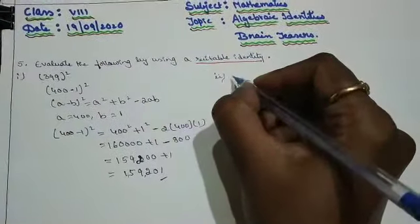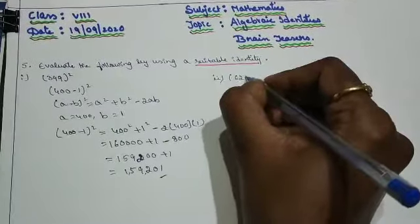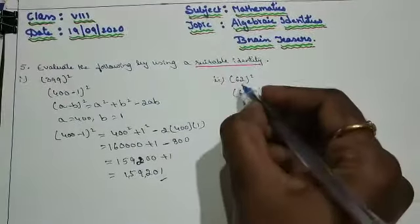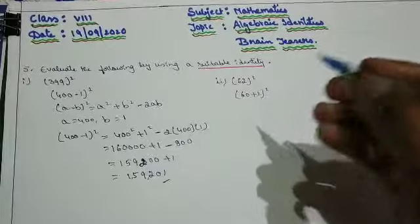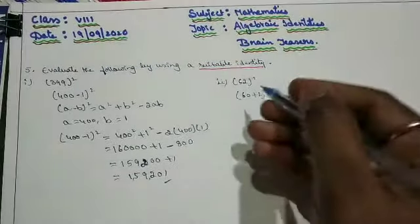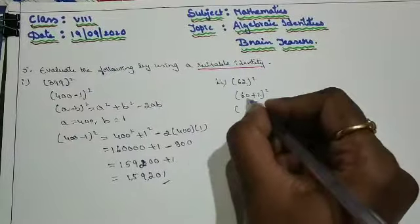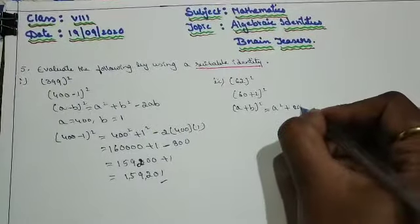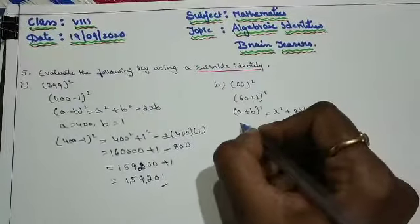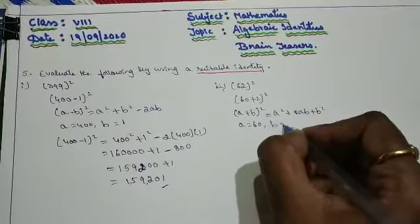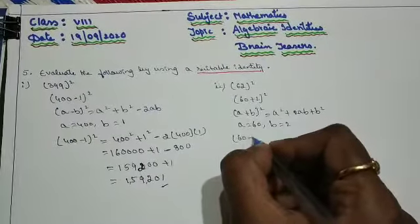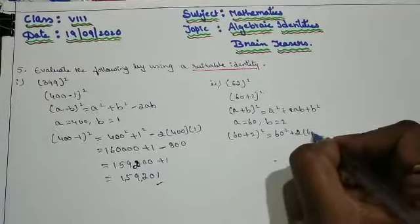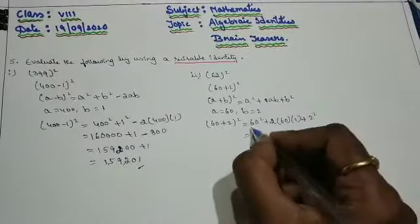Now we will move to the second question. The second question is 62 whole square. 62 can be written as 60 plus 2, whole square. Because 62 is not 65 and above, it is 65 and below, so we go for the previous round number. Then it can be written as 60 plus 2, whole square. Comparing: the a value is 60 and the b value is 2.